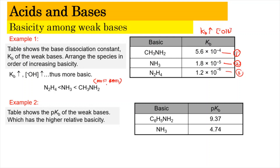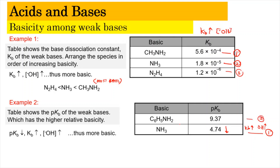For example number 2, the table shows the pKb of the weak bases and we need to identify which has higher relative basicity. As mentioned, Kb and pKb are inversely proportional — when the pKb value is lower, the Kb value is higher, meaning the hydroxide concentration is higher as well. So this gives higher basicity compared to phenylamine. We can say that the relative basicity of ammonia is higher than phenylamine, which is C6H5NH2.